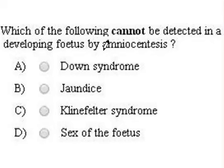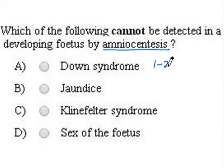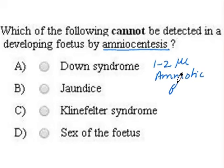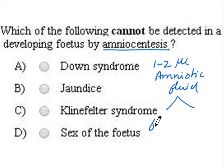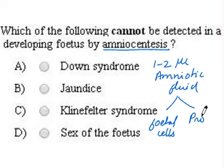In order to answer this question, let us first understand what is meant by amniocentesis. In the process of amniocentesis, 1 to 2 microliters of the amniotic fluid is taken out. This fluid contains fetal cells and proteins. Fetal cells can be used to study if there is any abnormality in the fetus, and the proteins can also be used.